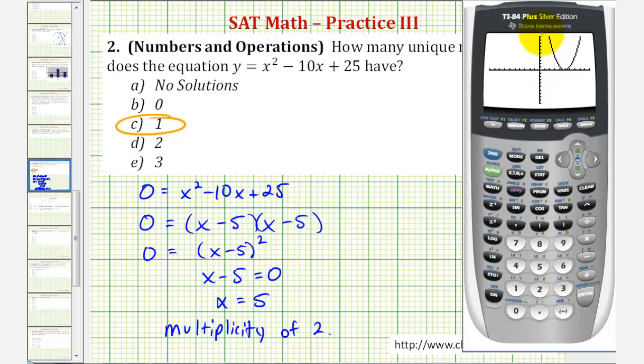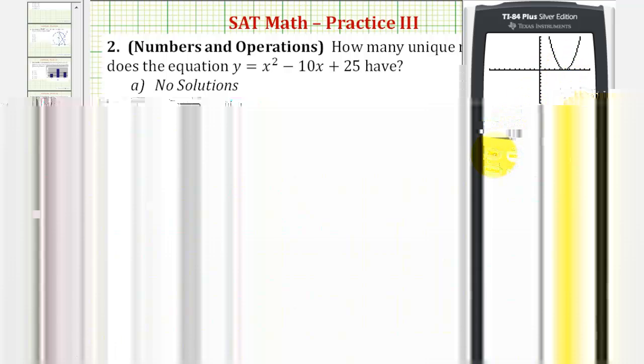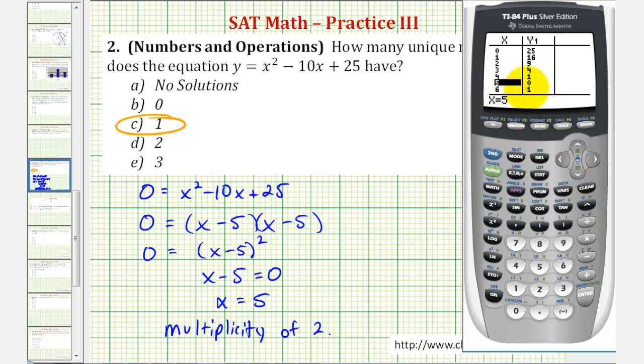Notice how this parabola only has one x-intercept right here, where it touches the x-axis. It does look like this would be the point five, zero, verifying our root. But let's also use the table to make sure that's true. We'll press second graph. Notice if we scroll down to five, when x is five, the y-coordinate is zero, verifying what we found algebraically.